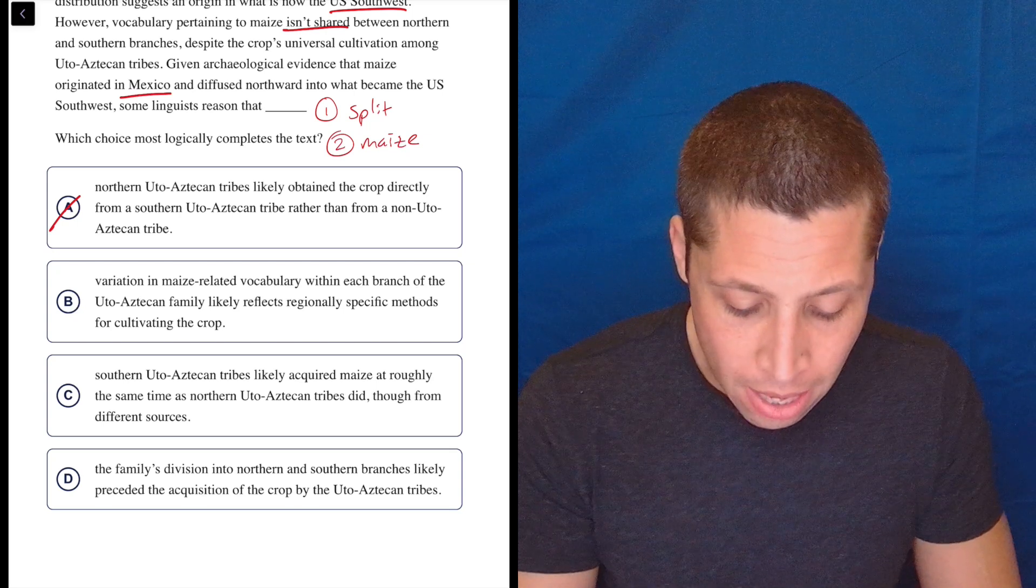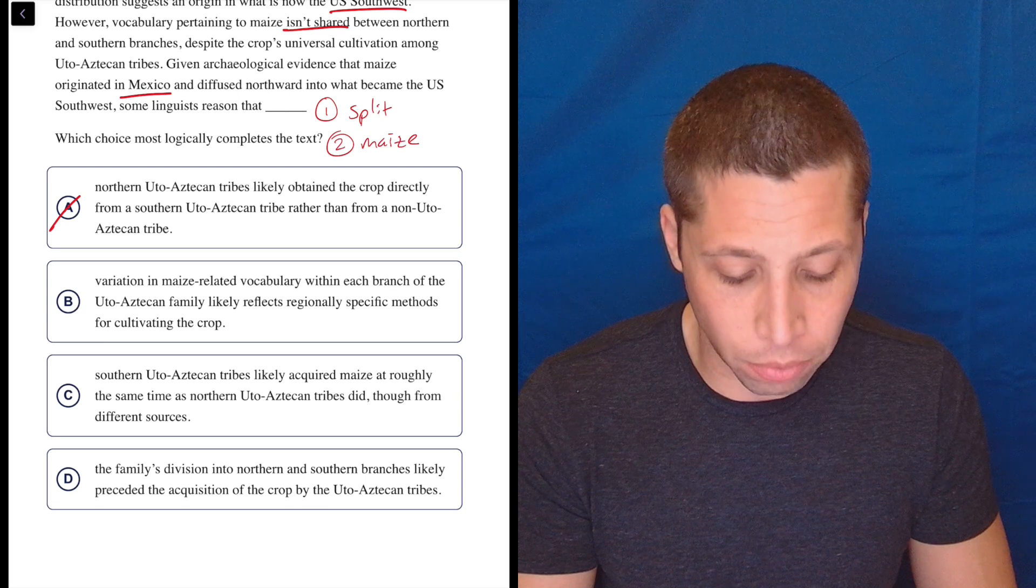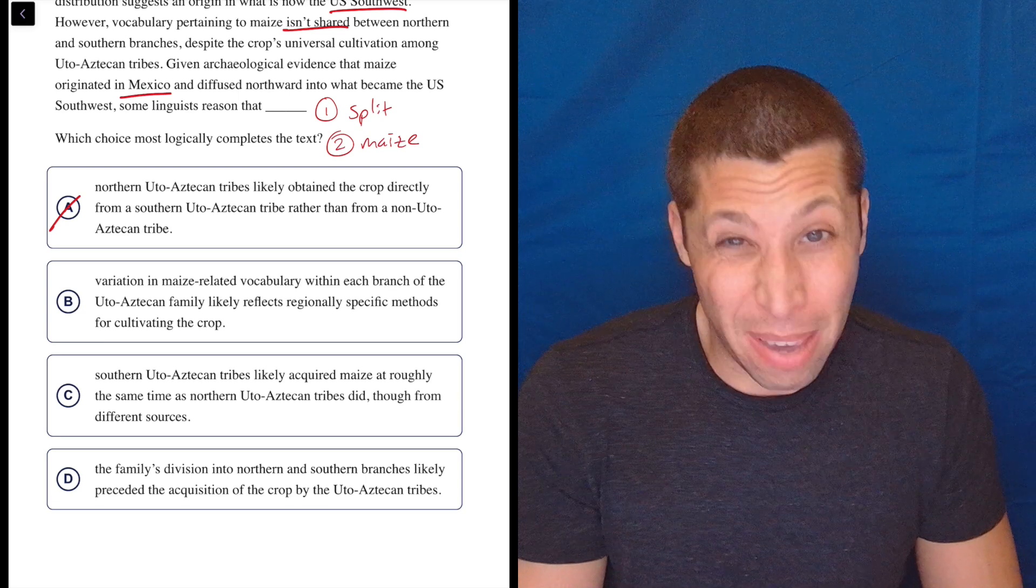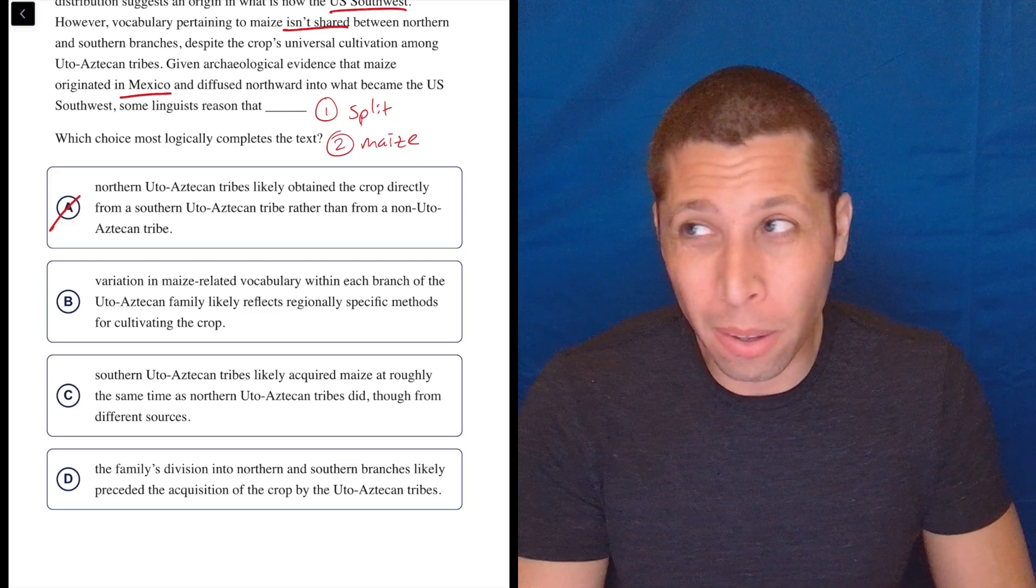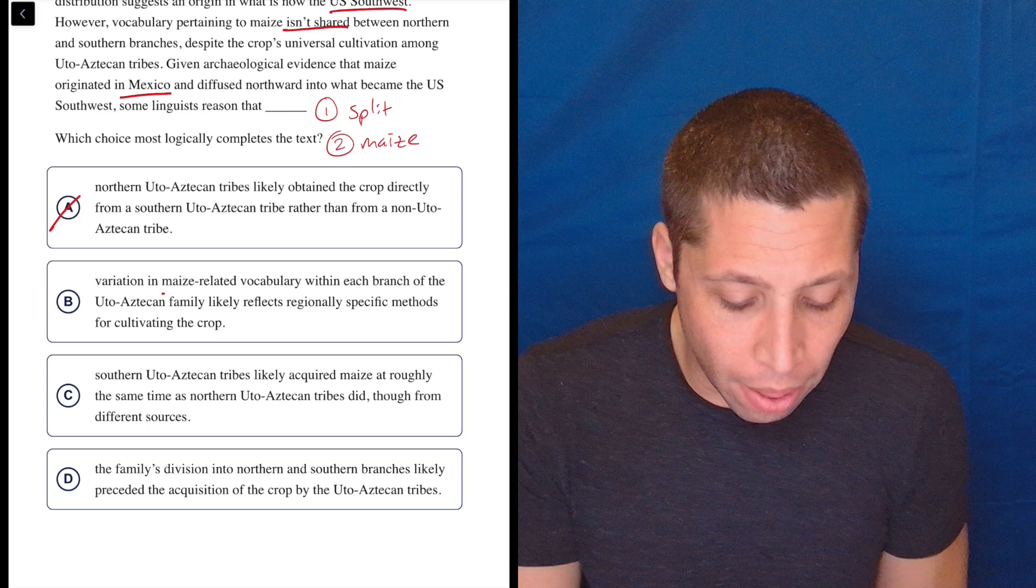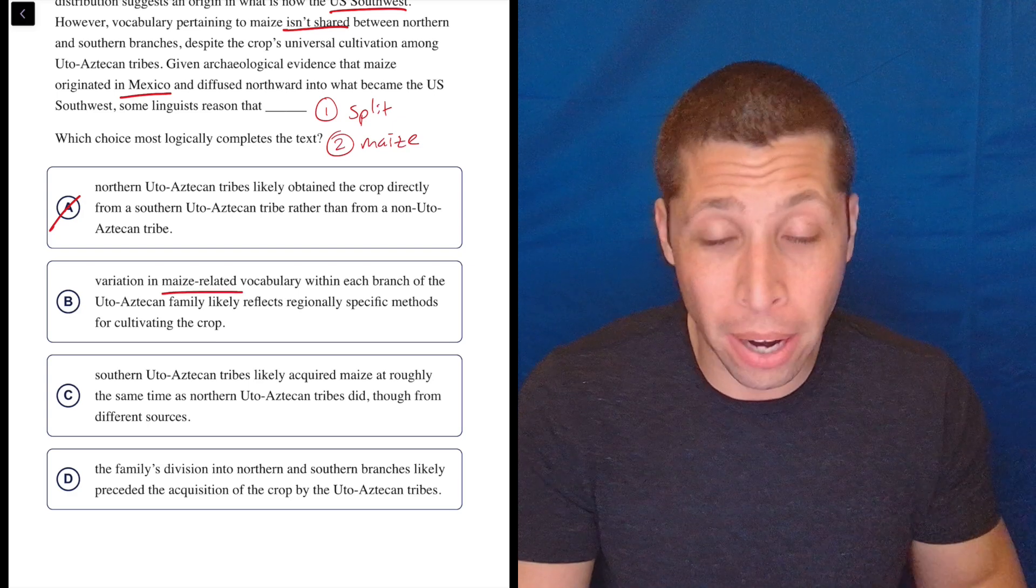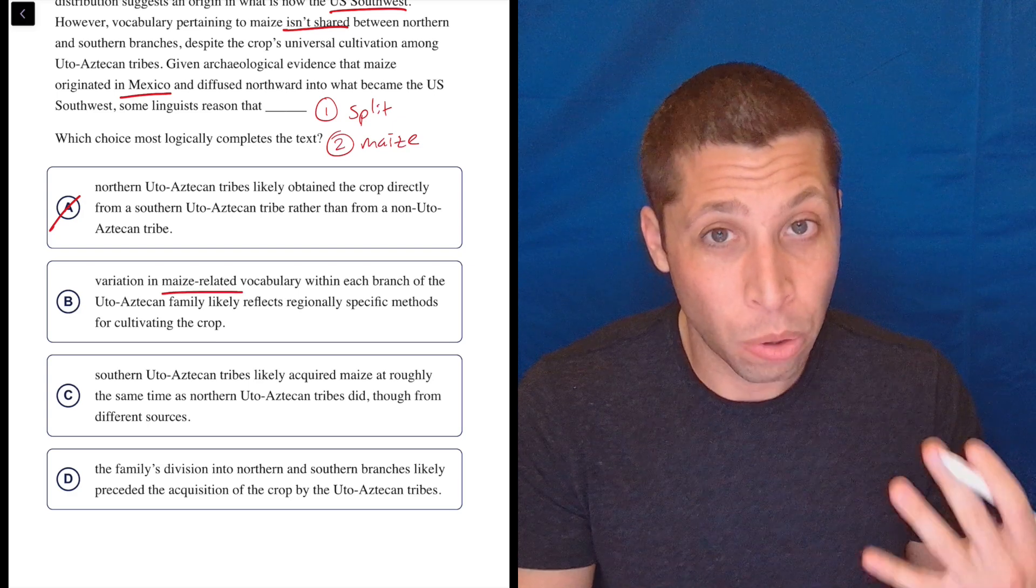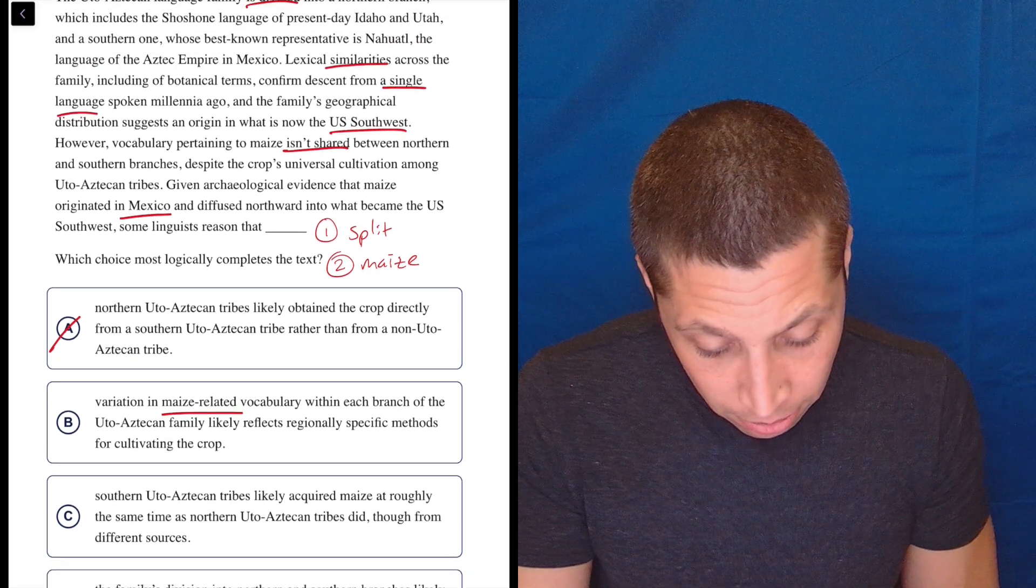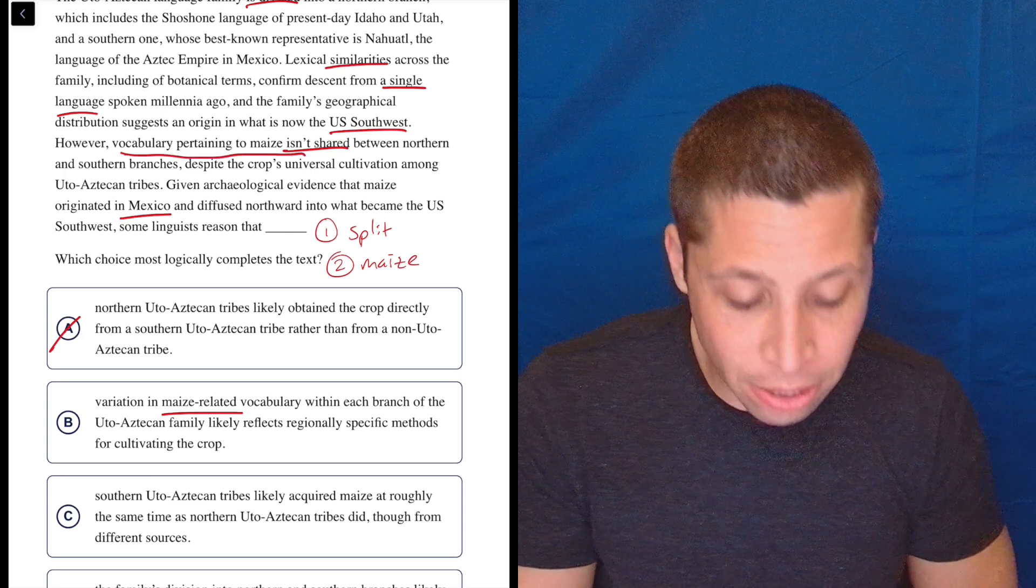B, variation in maize-related vocabulary within each branch of the Udo-Aztecan family likely reflects regionally specific methods for cultivating the crop. Maybe. I mean, but then why wouldn't they have the same word for it? I just don't think that seems to explain anything. We're not really talking about maize-related vocabulary, but how to cook it, prepare it, eat it, whatever. We're just talking about the word itself, right? Aren't we? I mean, I guess it does say vocabulary pertaining to maize isn't shared.